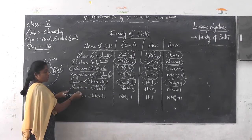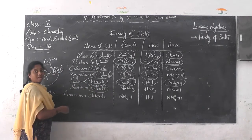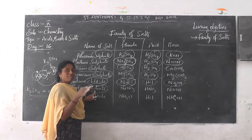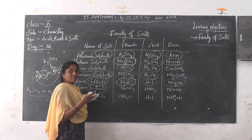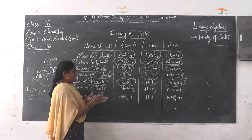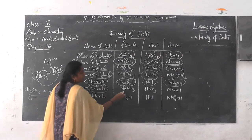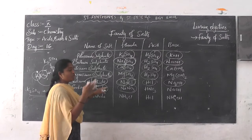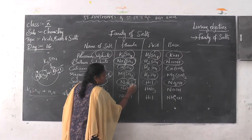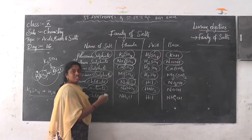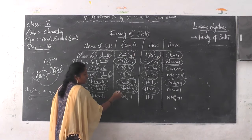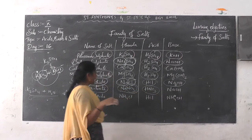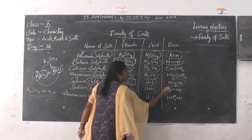The same way, sodium nitrate — what is present here? Nitrate. It means it belongs to the nitrate family. Nitrate family means which type of acid reacts? Nitric acid. The formula of sodium nitrate is NaNO3. What is the acid? Nitric acid — HNO3. And the base is sodium hydroxide.